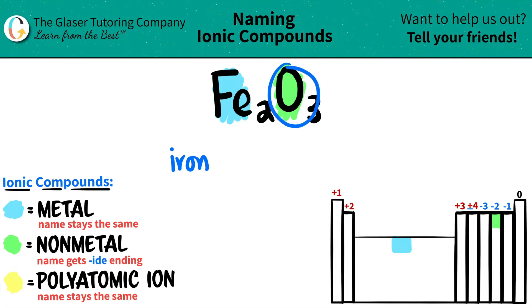The non-metal, in this case oxygen, gets the -ide ending. So it was oxygen, but now I turned it into oxide. The Y-G-E-N turns into I-D-E.